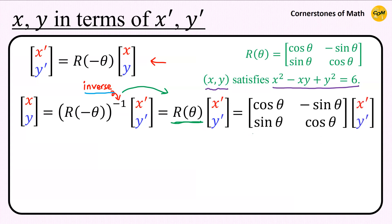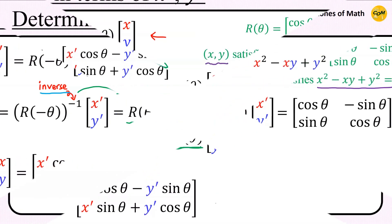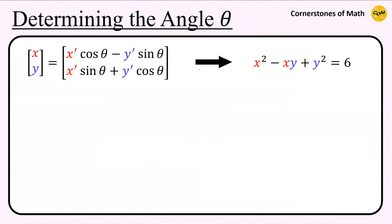So, we have matrix [cosine theta, minus sine theta; sine theta, cosine theta] here. Therefore, we obtain this relation. The next thing to do is substituting this expression into the equation of the conic section. Then we obtain this.